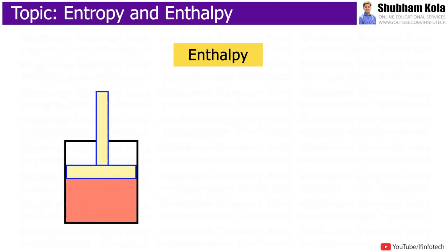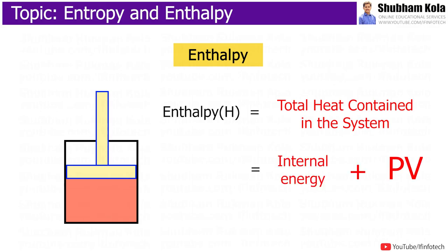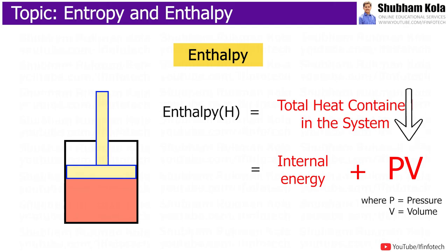Enthalpy is the total heat contained in the system, where total heat is the sum of internal energy and PV — the product of work added or work extracted by varying either pressure or volume. In simple terms, PV could be considered as potential work that is stored in a gas in the form of pressure and volume V.